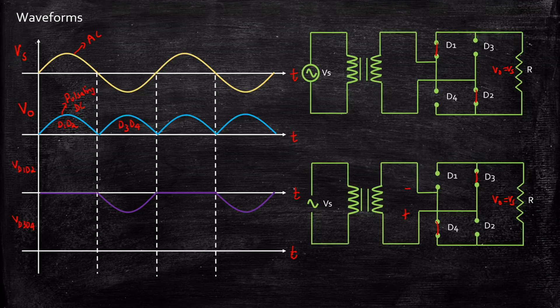The voltage waveform across D3 and D4 is quite opposite to that of D1 and D2. During positive half cycle, D3 and D4 are reverse biased and a negative voltage appears across them. As the cycle progresses into the negative half cycle, D3 and D4 conduct and the voltage across them is zero. The cycle repeats in this fashion.